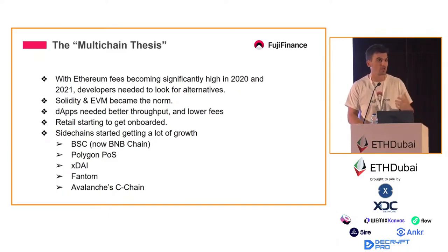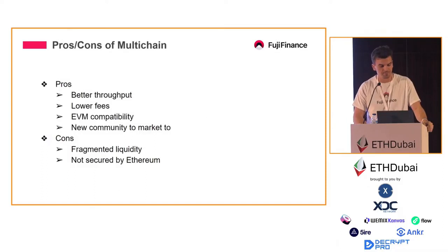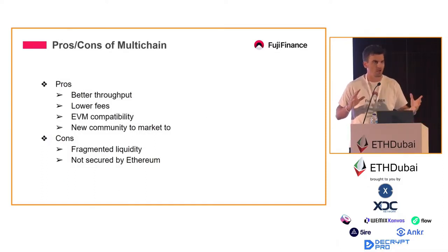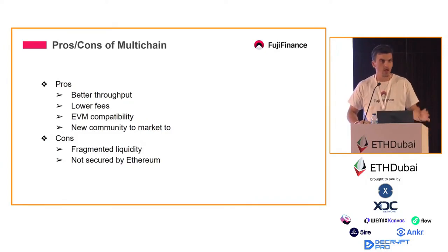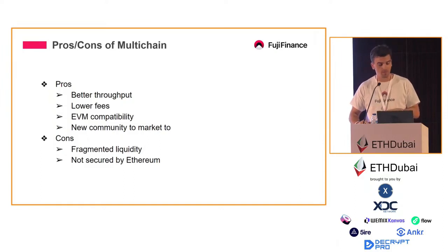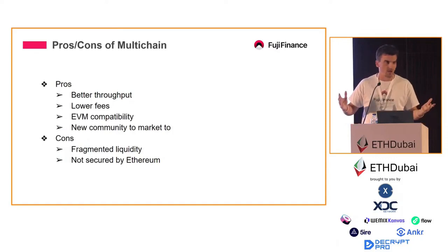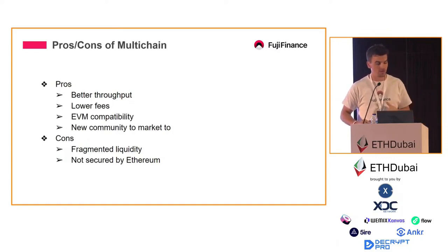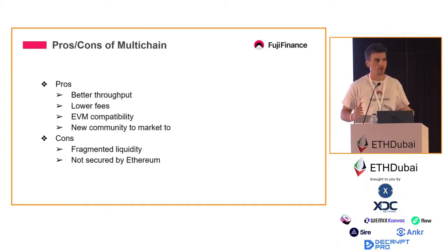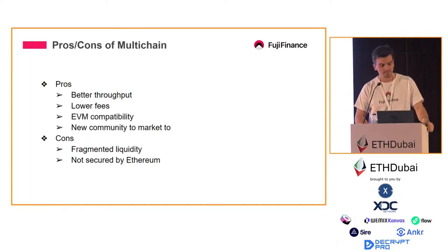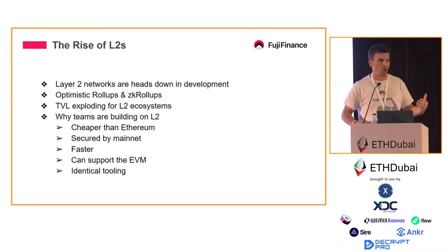Some of these side chains started to get a lot of growth — BSC (now known as BNB Chain), Polygon PoS, xDai, Fantom, and even Avalanche's C-Chain all started to really flourish and grow in terms of activity. But with the multi-chain thesis there are pros and cons. You have better throughput, lower fees, EVM compatibility, and a new community to market to. The cons are fragmented liquidity, and you're not really secured by Ethereum — you have different security assumptions.